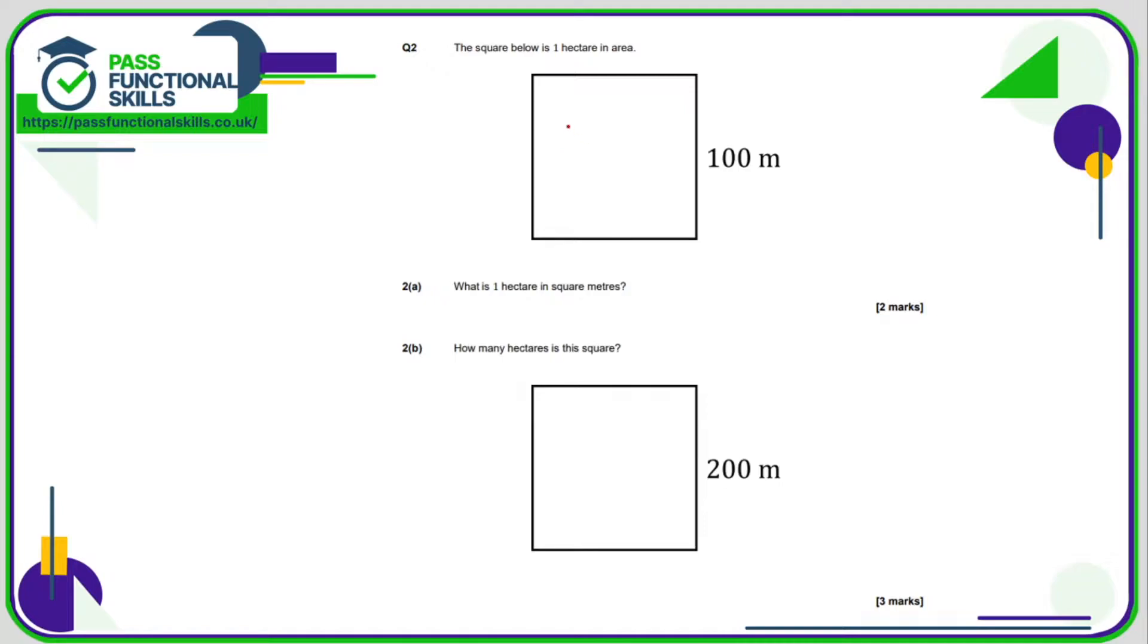Question number two, the square below is 1 hectare in area. So it's a square, so it's 100 by 100. So therefore the area is going to be 100 times by 100, which is 100 with two zeros. So that is 10,000 meters squared, which is the answer to the first question.